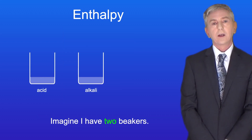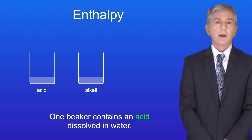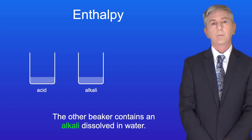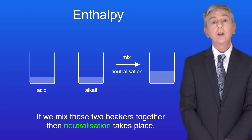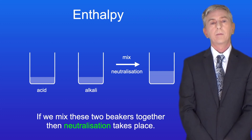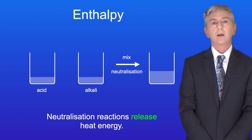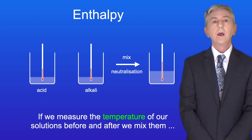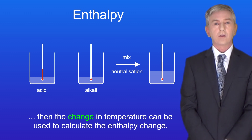Imagine I've got two beakers. One beaker contains an acid dissolved in water and the other beaker contains an alkali dissolved in water. If we mix these two beakers together then neutralization takes place. Neutralization reactions release heat energy, so if we measure the temperature of our solutions before and after we mix them, then the change in temperature can be used to calculate the enthalpy change.